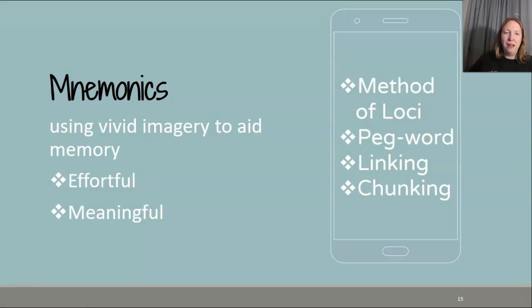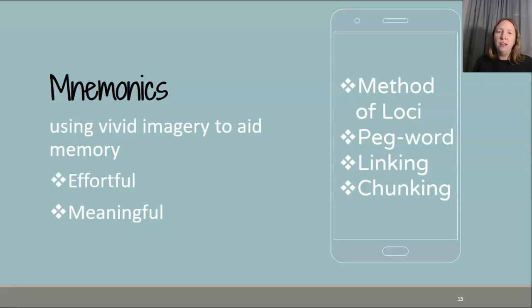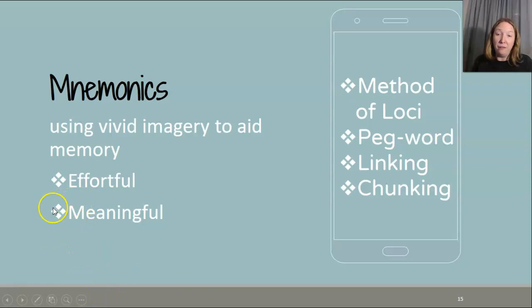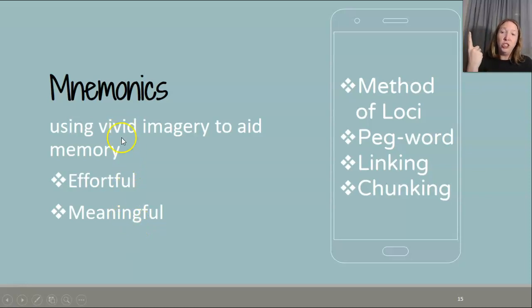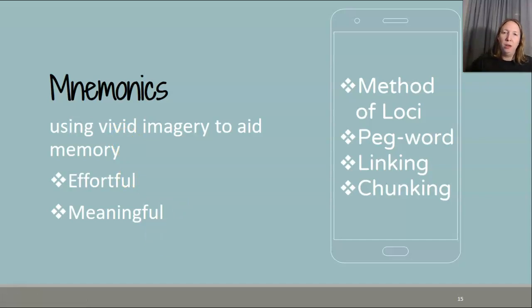So if those are things that make our memory good sometimes and flawed other times, what can we do to actually bolster our memory? We can use mnemonic devices — essentially memory tricks that use vivid imagery to aid your memory. They are effortful and you're usually constructing some sort of memory, sometimes personal and sometimes not. Visualization, effort, and making meaning out of information are some of the things that make memories stronger.